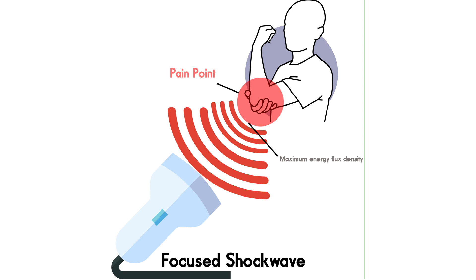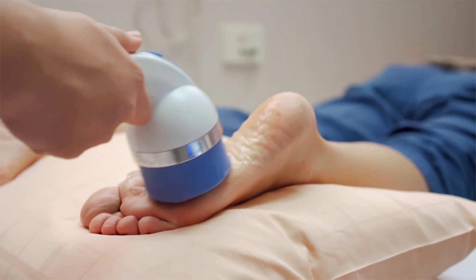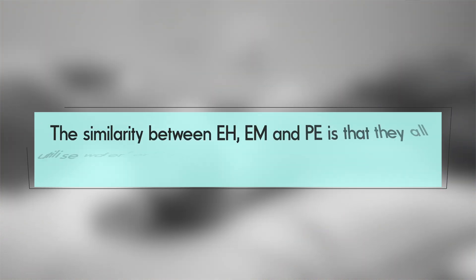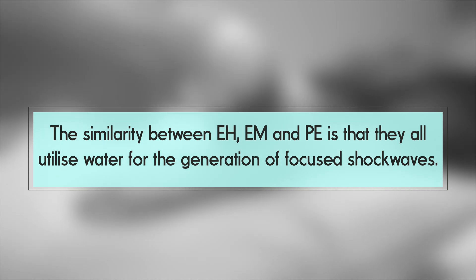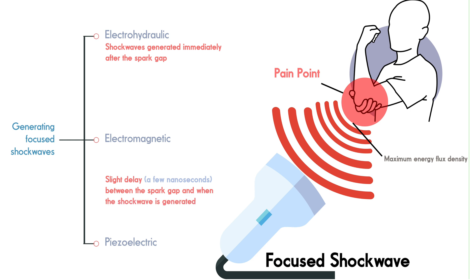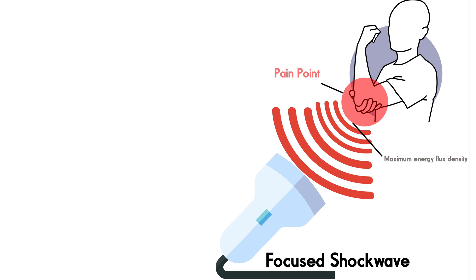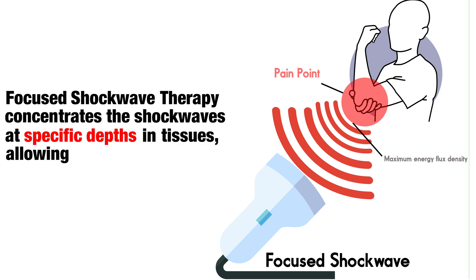Now there are two main kinds of extracorporeal shockwave therapy: focused shockwave therapy and radial shockwave therapy. Focused shockwaves can be created in three ways: electrohydraulic, electromagnetic and piezoelectric. We don't need to delve too much into the technicalities of these methods. The thing that is common to each of these three is that they all use water to generate focused shockwaves. They differ with respect to the moment at which the shockwaves are formed. Focused shockwave therapy concentrates the shockwaves at specific depths in tissues, allowing targeted treatment.